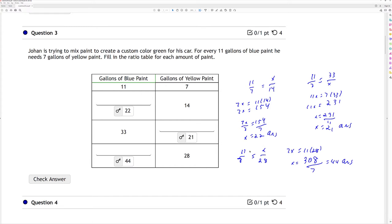And my last one here, I have 11 is to 7 as x is to 28. Cross multiply. I have 11 times 28, it's 308 divided by 7, which is 44. And that's my answer there.